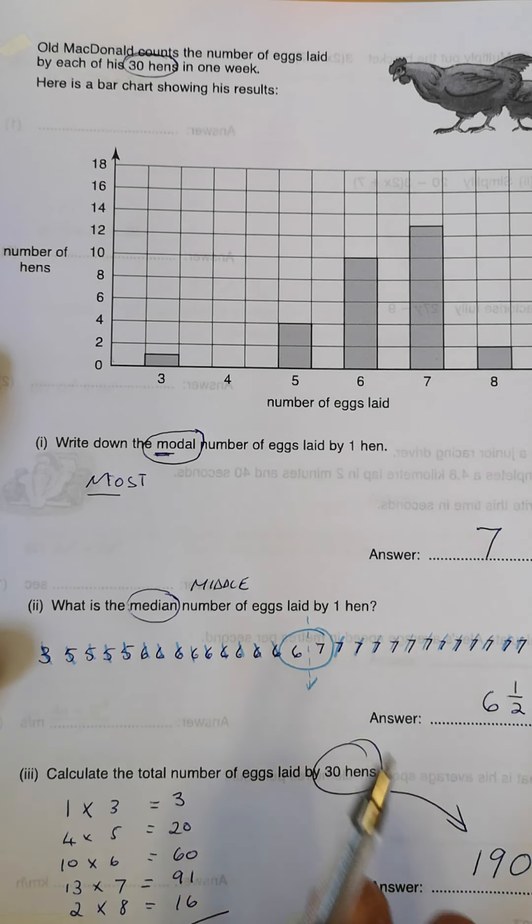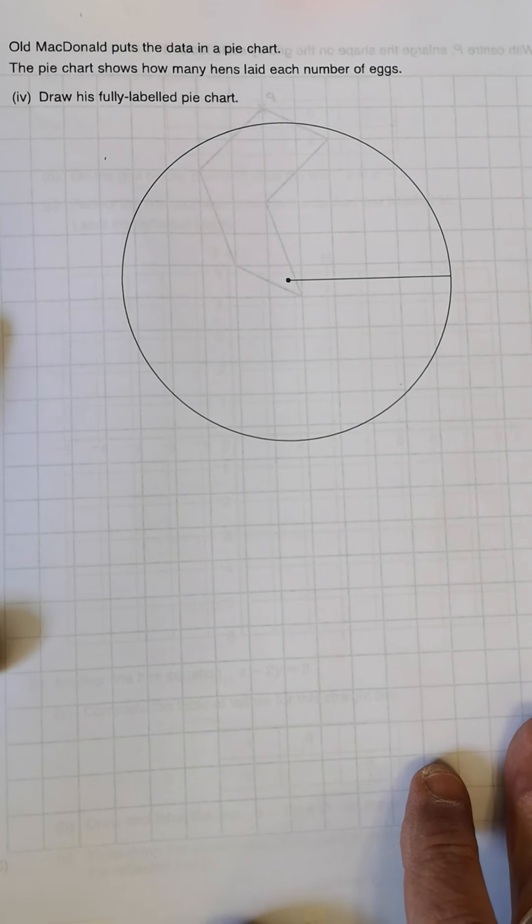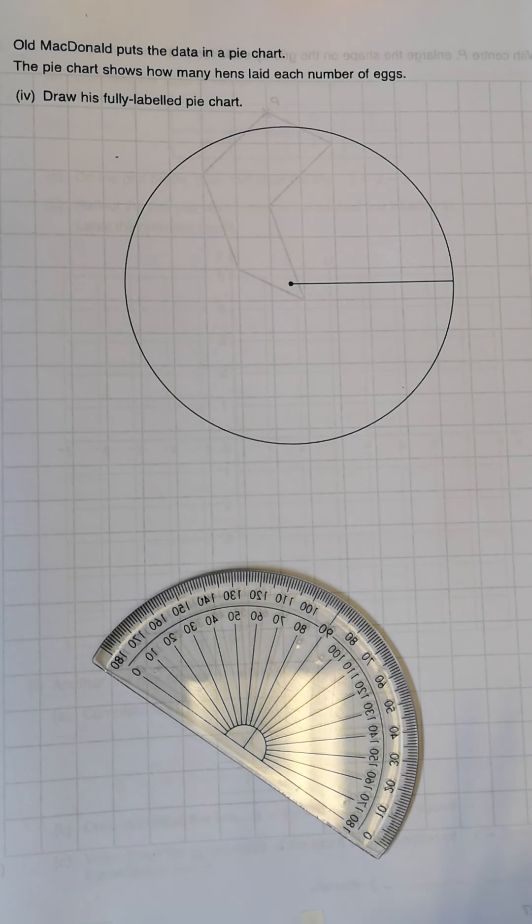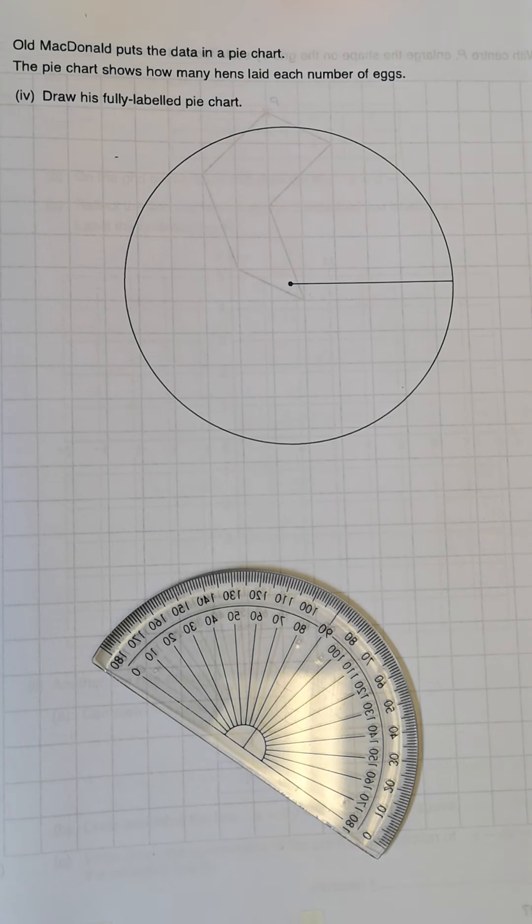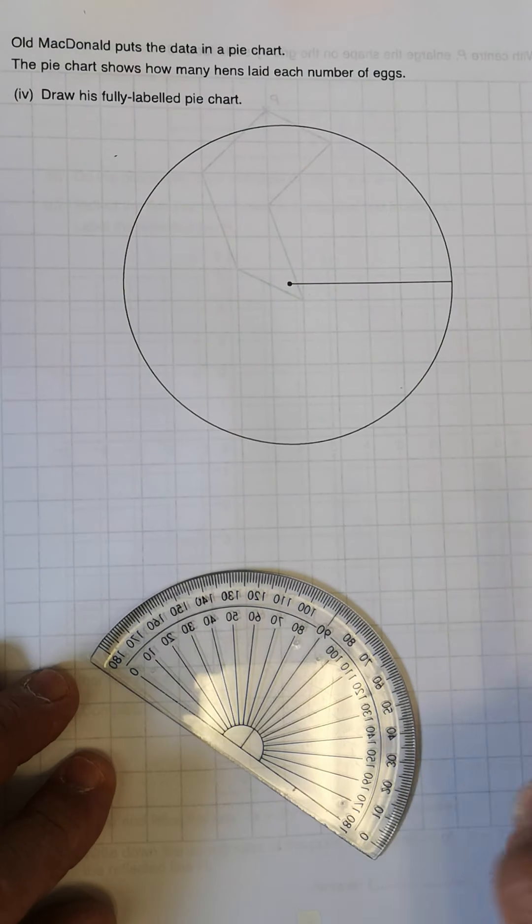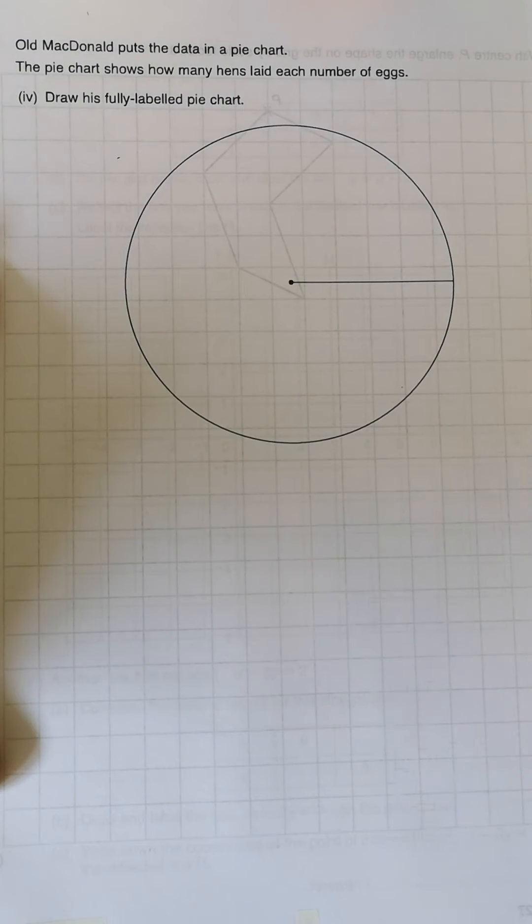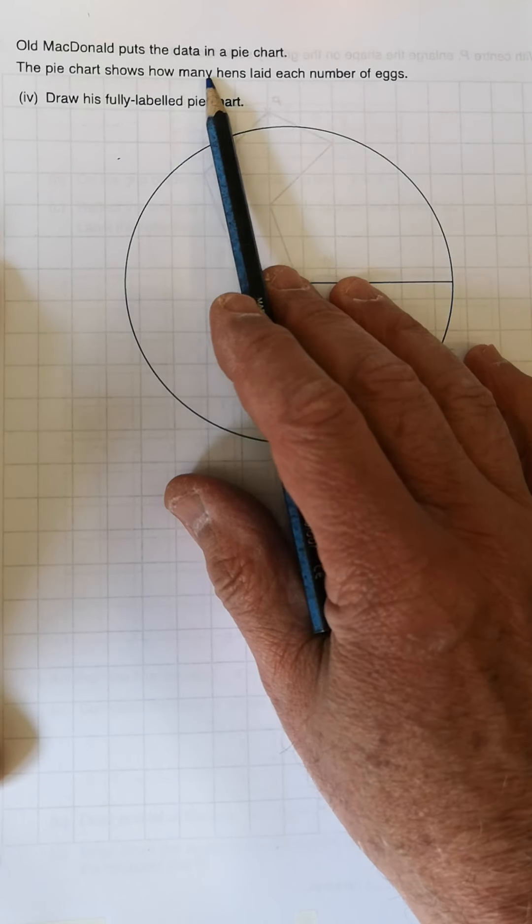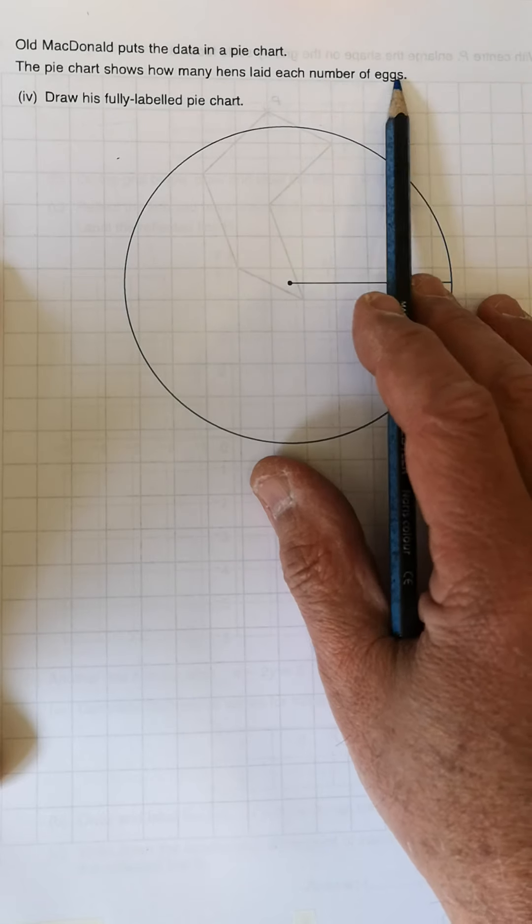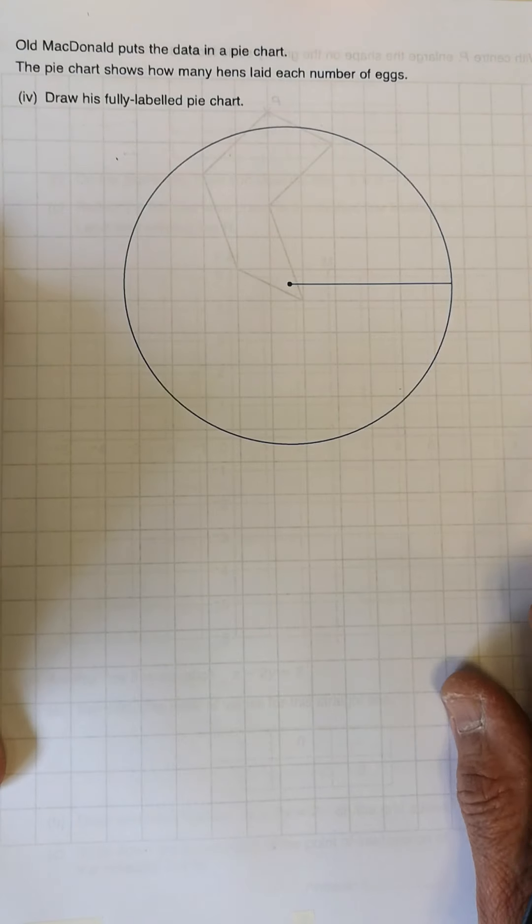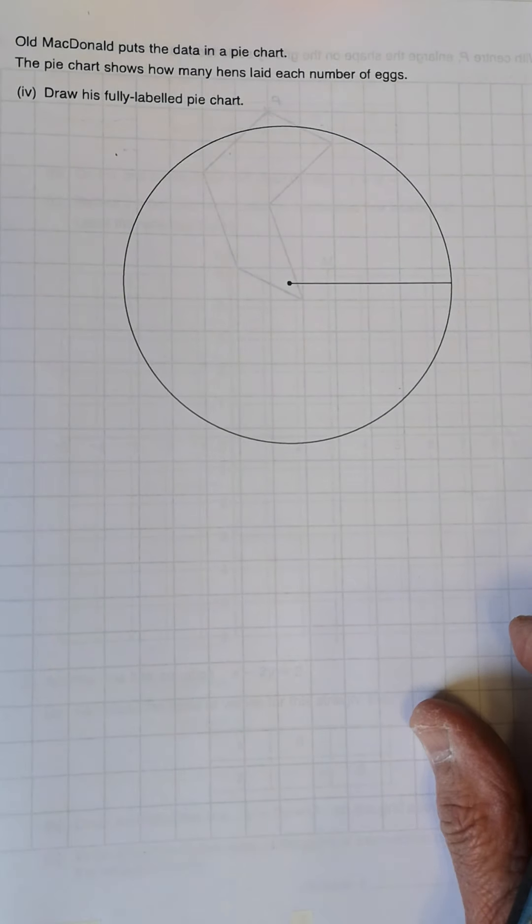Now they're going to ask us to translate all of this information that we've worked out here onto a pie chart. And this is very important now. You will need your protractor. You will need a sharp pencil. In this instance, I'm using a pen. Or let me use a blue, which will stand out more for you. Blue pencil.